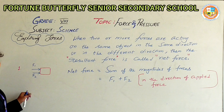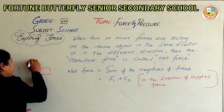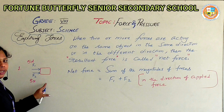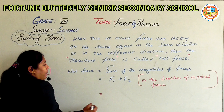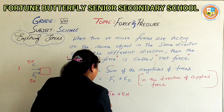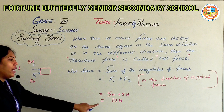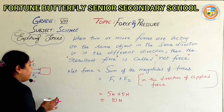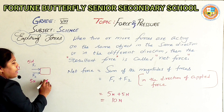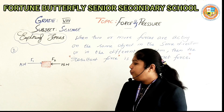Let us take F1 as 5 newtons and F2 also as 5 newtons. Then the net force in this case will be 5 newtons plus 5 newtons, which equals 10 newtons. The direction will be in the direction of the applied force — towards east.